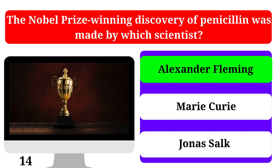The Chernobyl disaster occurred in which year? 1986, 1979, or 1991. The correct answer is 1986.